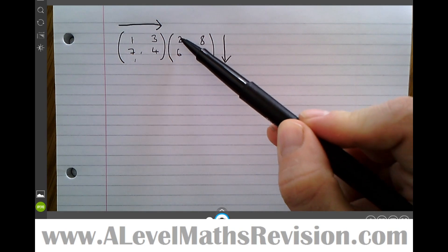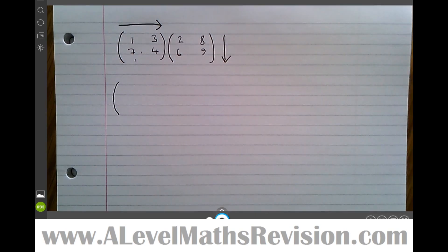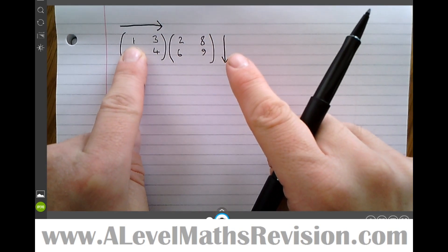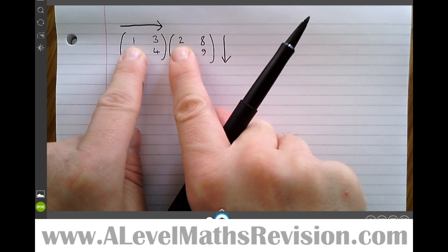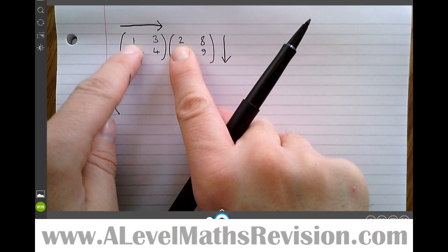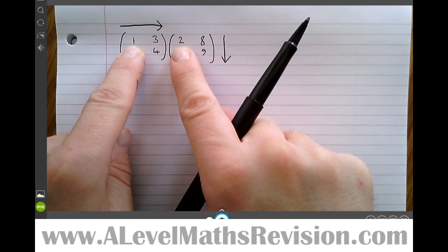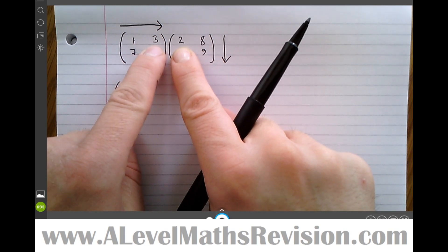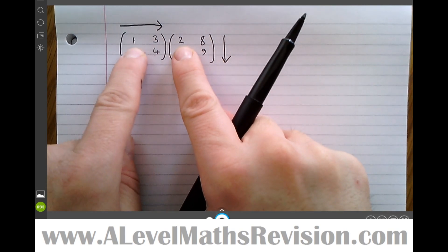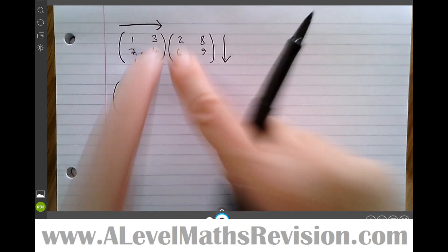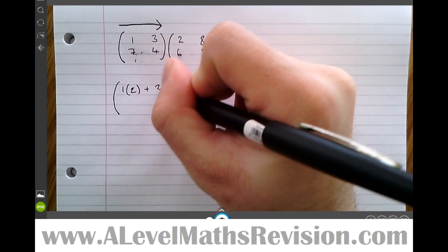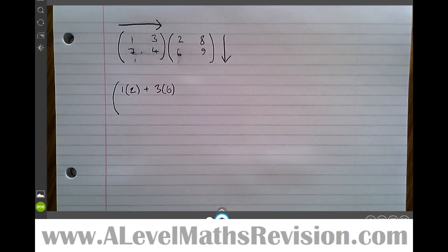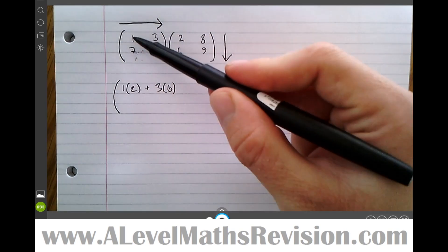I'm going to choose to start at the top in the first matrix and the left in the second. The words 'top' and 'left' give the top-left entry of our answer matrix. Starting at the top here and the left here, we multiply: one times two, then add the product of the next two entries following the direction of the arrows — one times two plus three times six. That gives the top-left entry of the answer matrix.